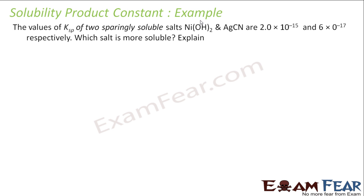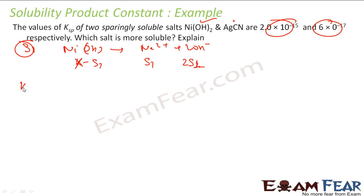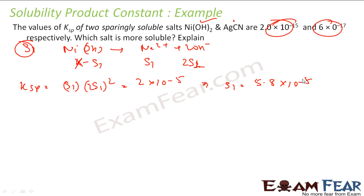Now, given the Ksp values of two sparingly soluble salts, we determine which is more soluble by finding S for each. For Ni(OH)₂ dissociating into Ni²⁺ and 2OH⁻, let solubility be S₁. At equilibrium [Ni²⁺] = S₁ and [OH⁻] = 2S₁. So Ksp = S₁ × (2S₁)² = 4S₁³. Given Ksp = 2 × 10⁻¹⁵, solving gives S₁ = 5.8 × 10⁻⁵.